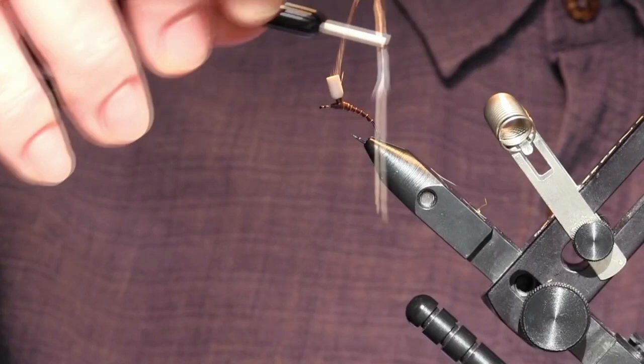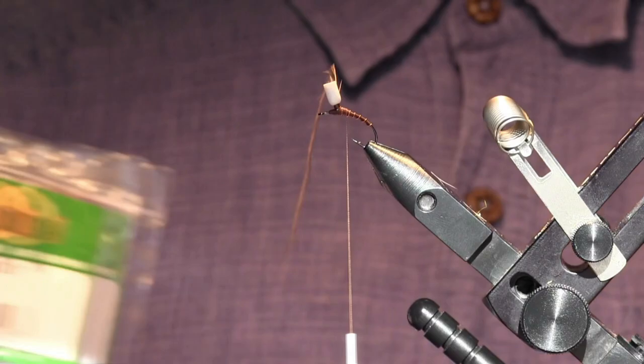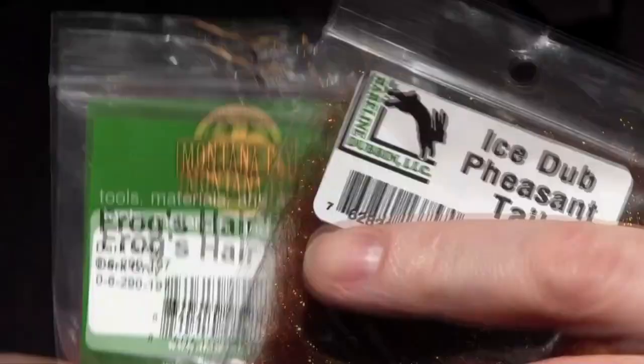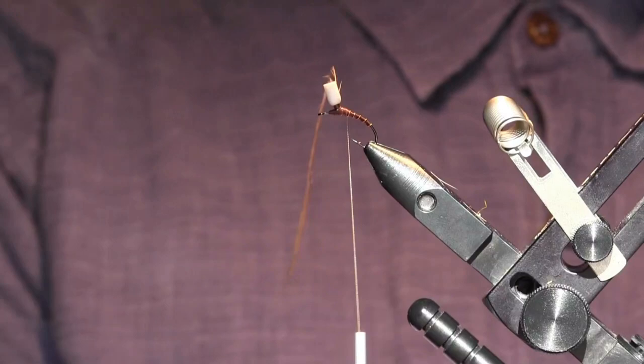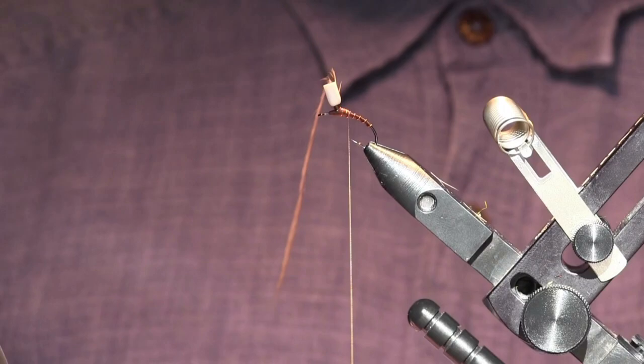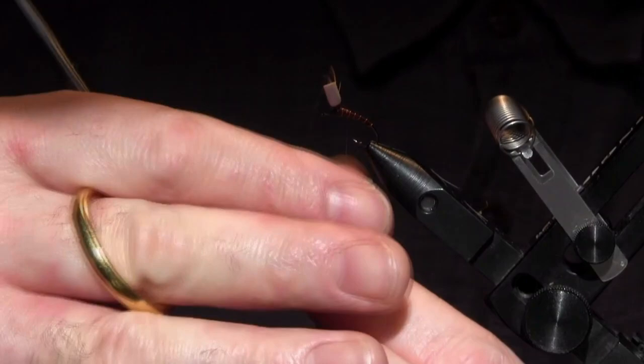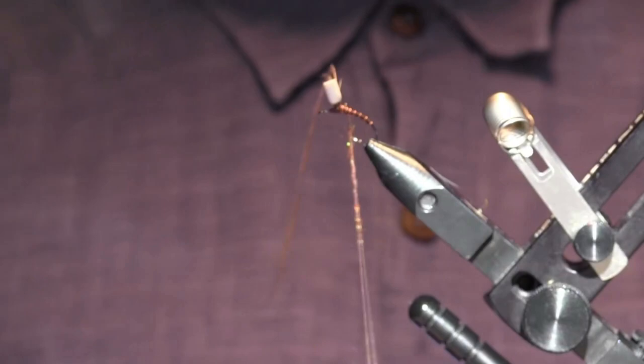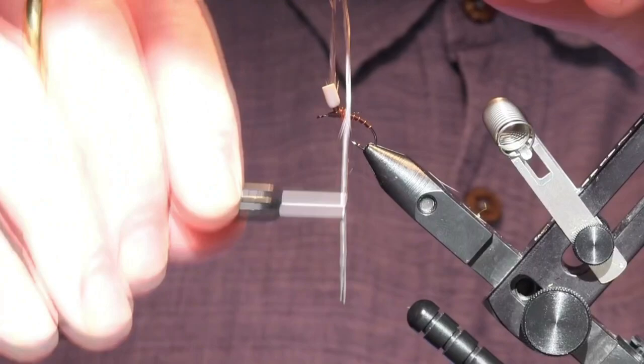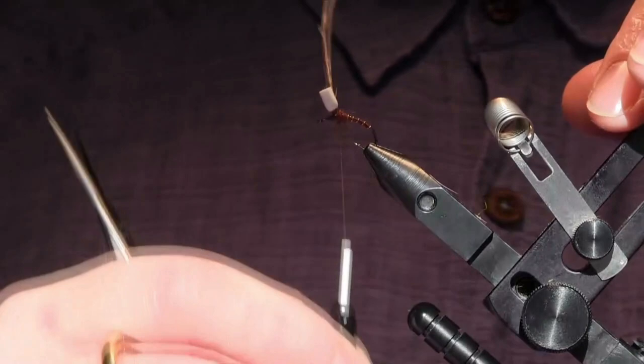I made a blend of frog hair dubbing and ice dubbing for our thorax. The ice dubbing gives a little sparkle and that frog's hair helps keep things afloat. I pinch off a little bit and as I direct dub this, I want to pinch the bottom and draw it up with the top hand here, always spinning your dubbing in the same direction. Once you get a little bit of working material on there, start wrapping forward. It's always a lot easier to put more on than take it off.